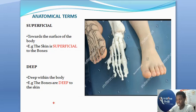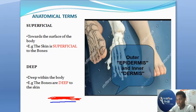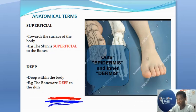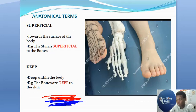Here is another important example: the human skin is made up of an outer epidermis and an inner dermis. As an anatomy student, I can describe the epidermis as being superficial to the dermis — the epidermis is close to the surface compared to the dermis, which is inside.